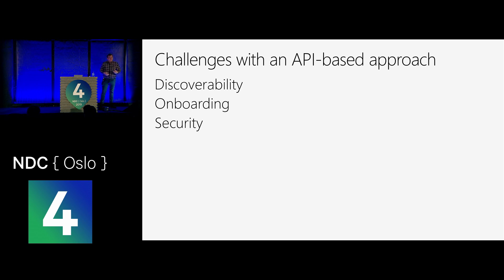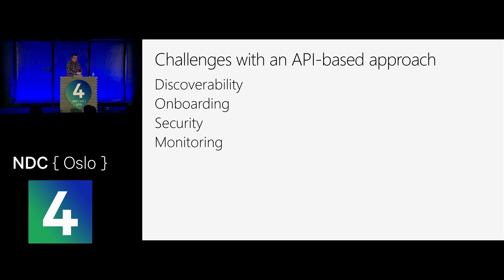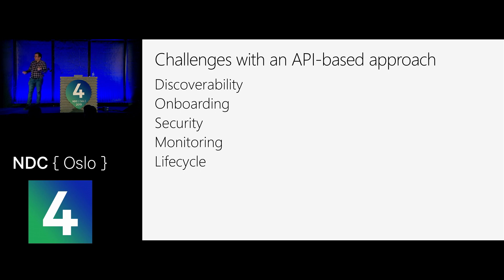We might have some data that's more publicly available — like weather APIs — but once you start talking about HR or financial data, we need a lot of security. We need to monitor these APIs to make sure they are working correctly and we know when things go wrong. And we need to think about the lifecycle: APIs get deployed, people start using them, then we make new versions and start deprecating old ones. We need to make sure users are notified, can start using new versions, know where they live, while still having a migration path.